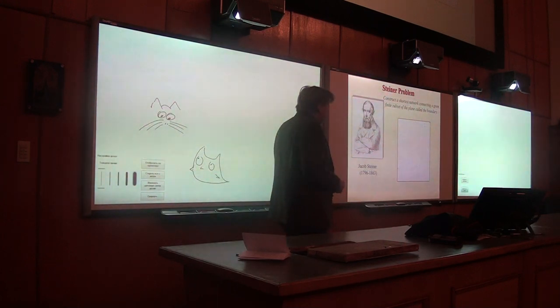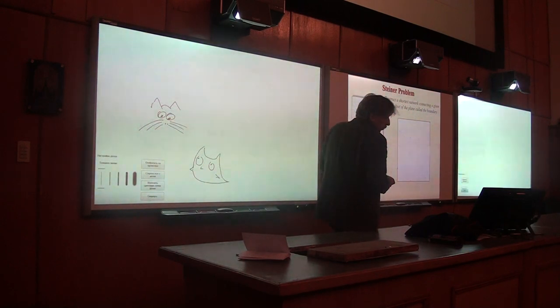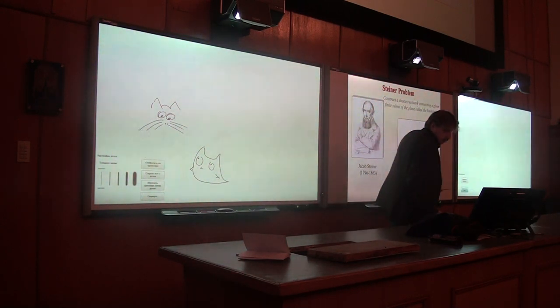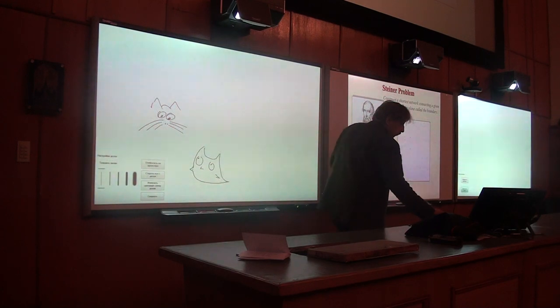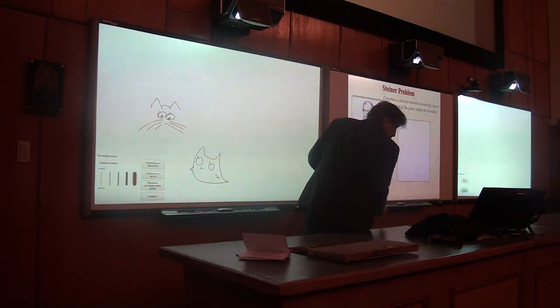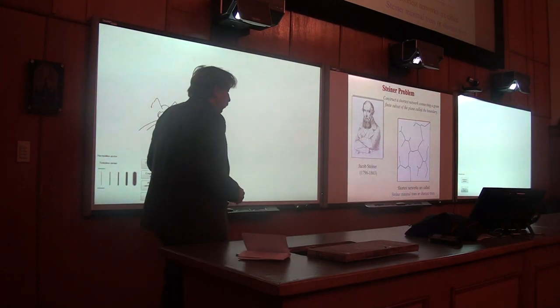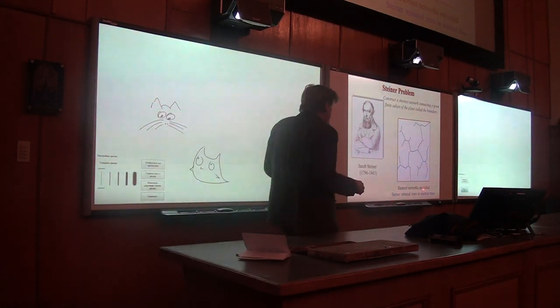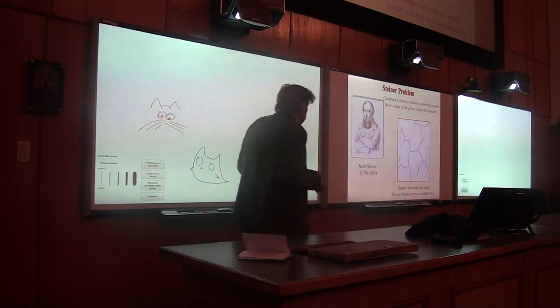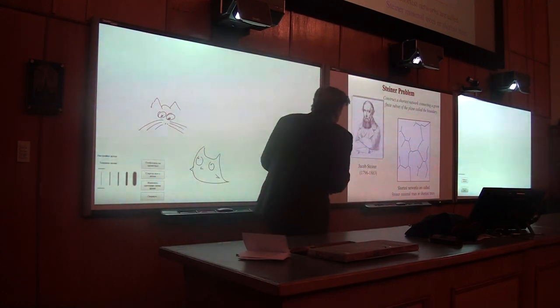The Steiner problem is to construct a shortest network for a given finite subset of points. Here you see some finite subset, and we try to connect them in an optimal way. This shortest network is usually called Steiner minimum tree or shortest tree. Tree means the graph which is connected without cycles.